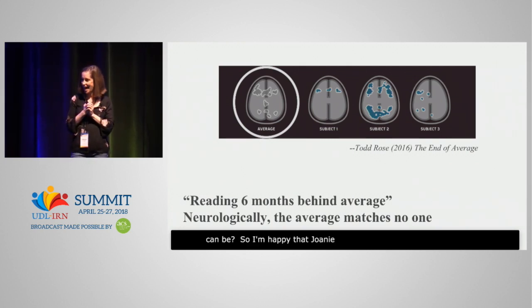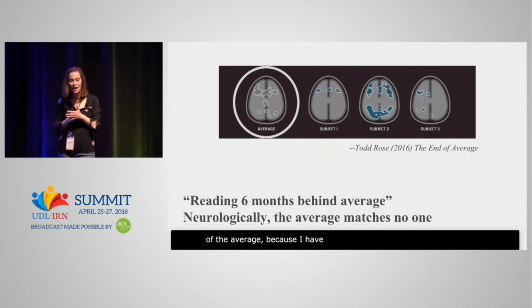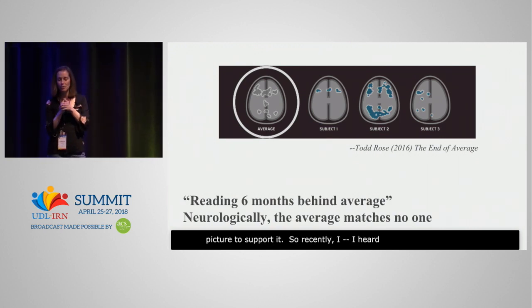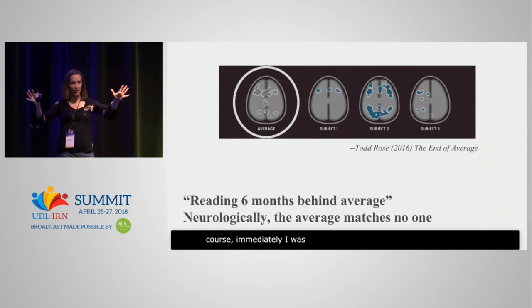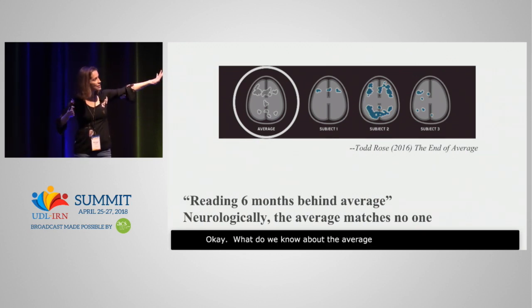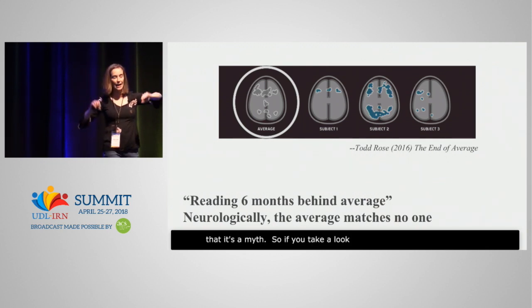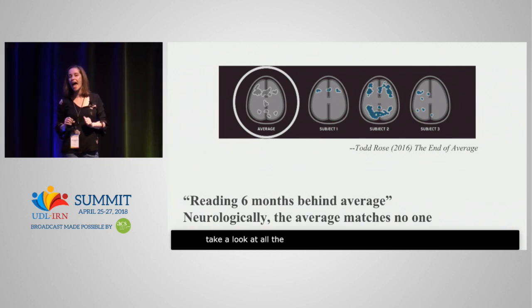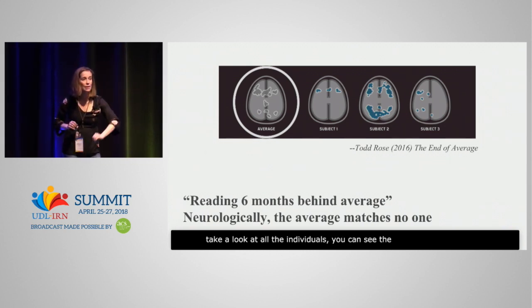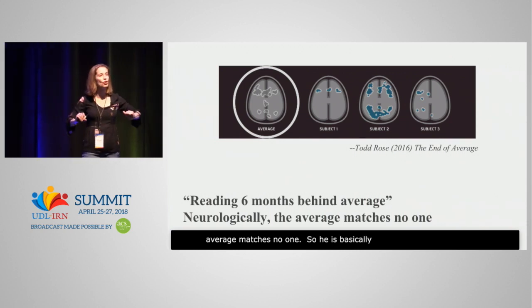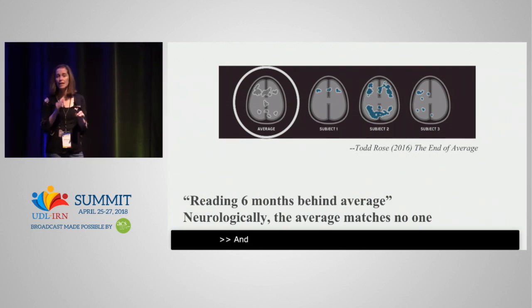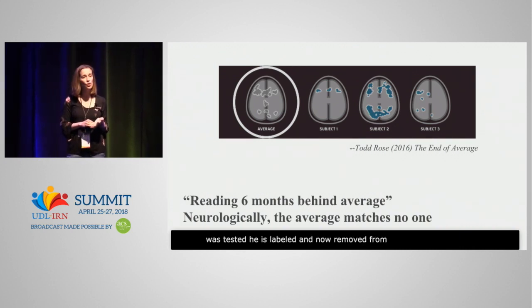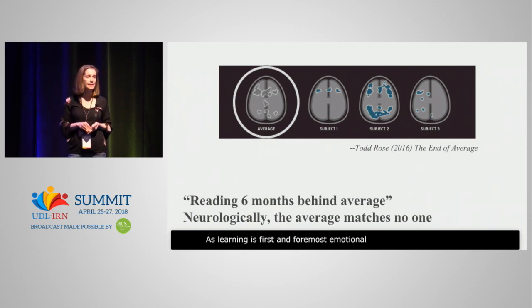I'm happy that Joni mentioned the myth of the average, because I have a little brain picture to support it. Recently, I heard the story of a little boy who is reading six months behind average, is what the parents said. And of course, immediately I was like: average? What do we know about the average? We know that it's a myth. So if you take a look at the circled brain — that's the average brain — and then you take a look at all the individuals, you can see the average matches no one. So he is basically six months behind a mythological no one. And what happened to this kiddo was that he was tested, he was labeled, and he is now removed from the classroom every day to work on his reading skills. As learning is first and foremost emotional, what is this design saying to this student?